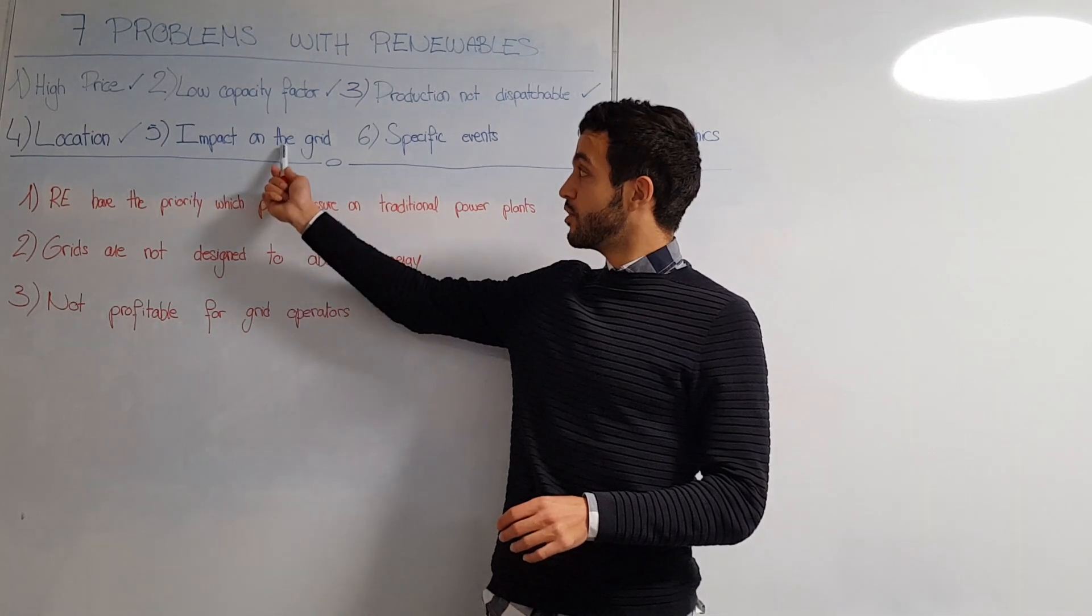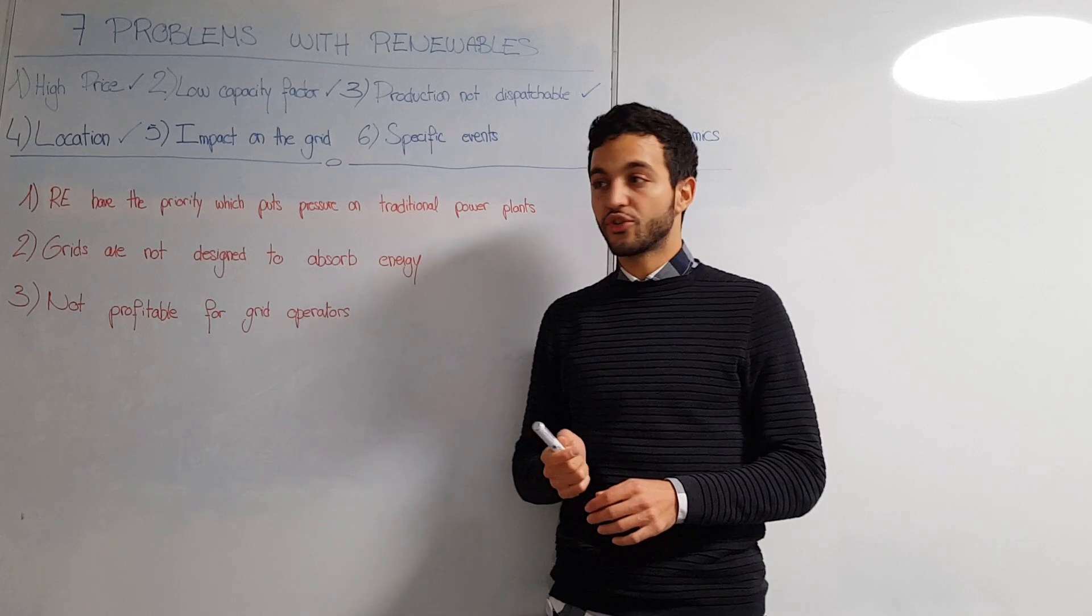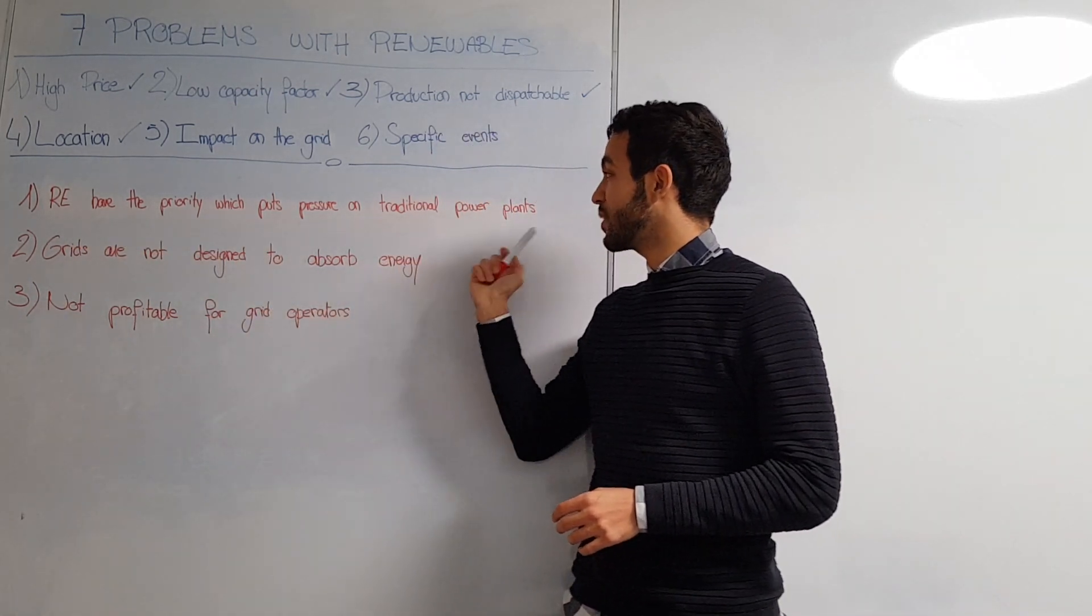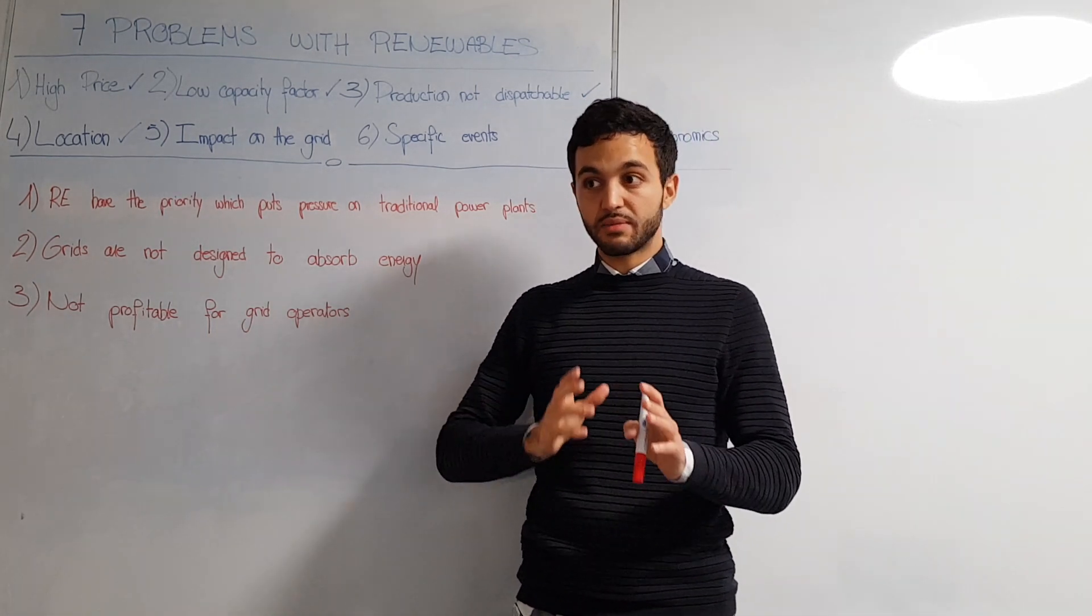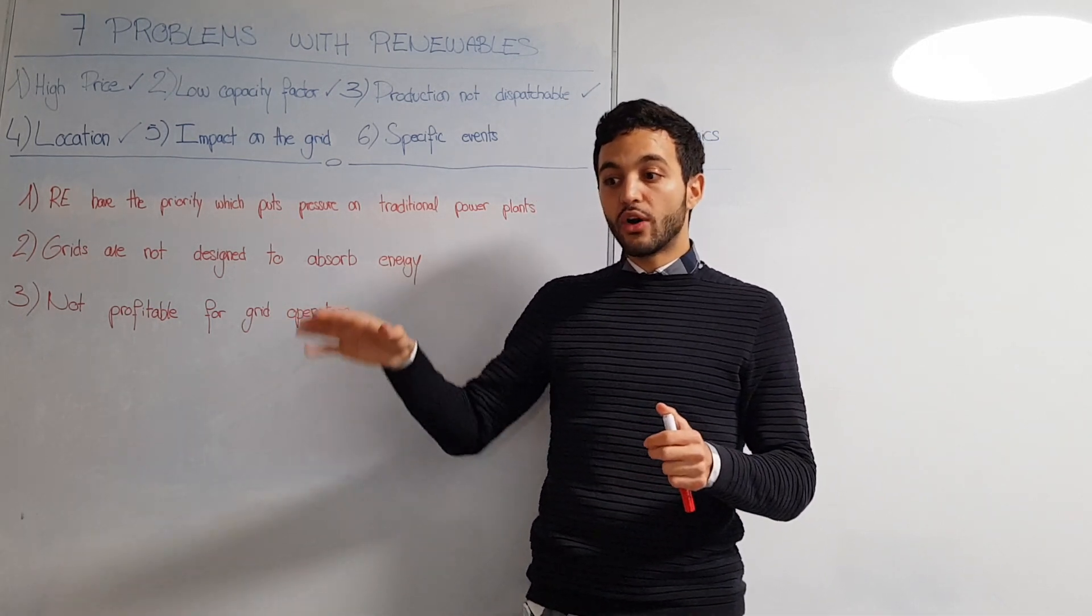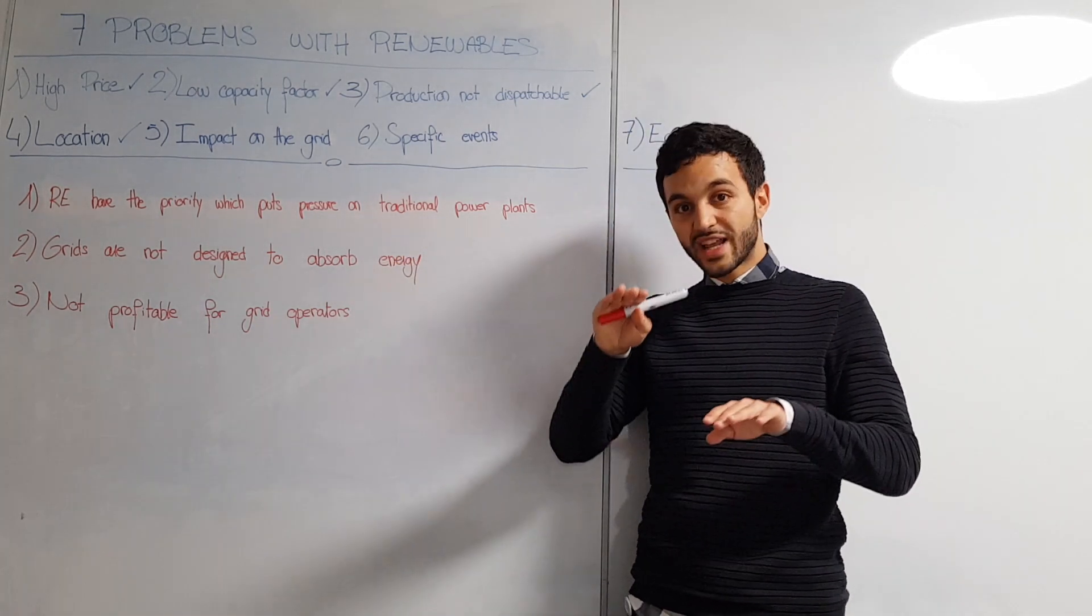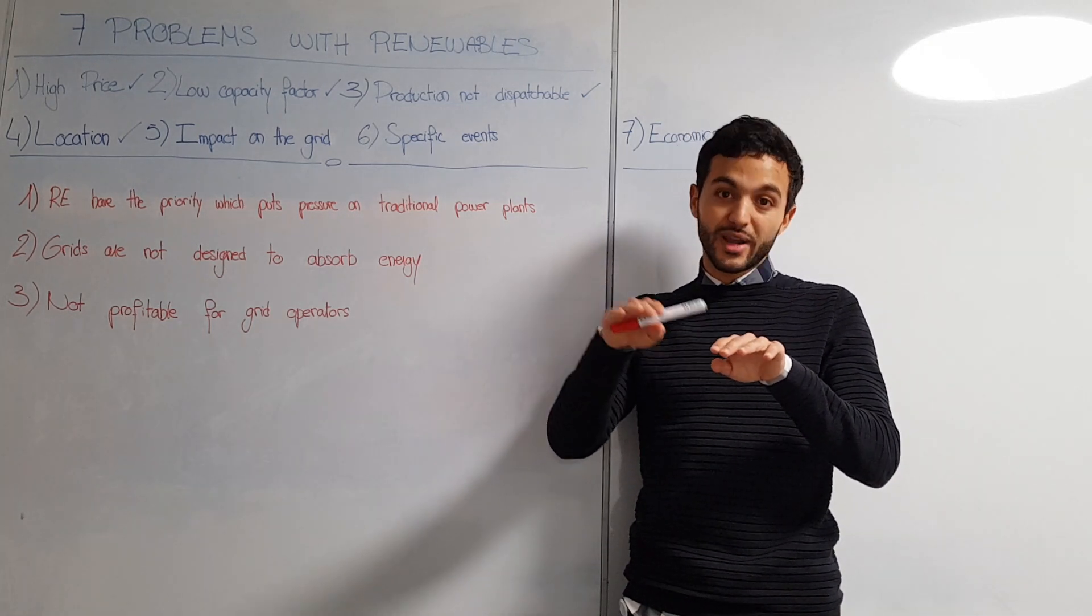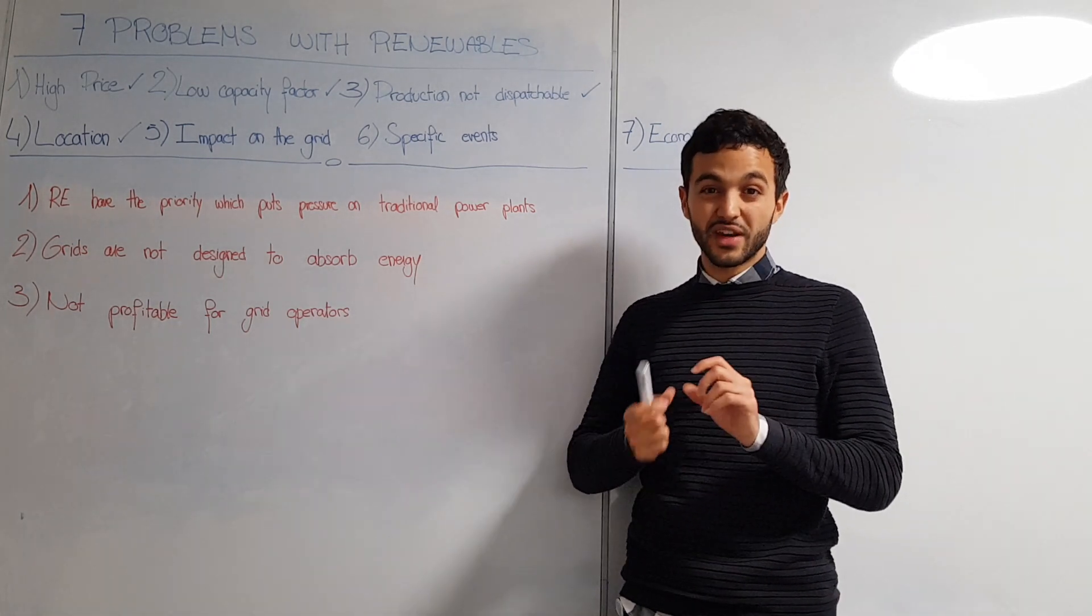Now we get to the fifth point: impact on the grid. For this one there's a lot to say, but I only selected three issues. The first one is renewable energies have priority, which puts pressure on traditional power plants. Since the production of renewable energies is not dispatchable and they have priority, you will always accommodate them in the grid, and traditional power plants always have to adjust their production - increase it or decrease it - in order to reduce the gap and get back to an equilibrium between production and consumption. This puts pressure on them because they need a lot of flexibility.